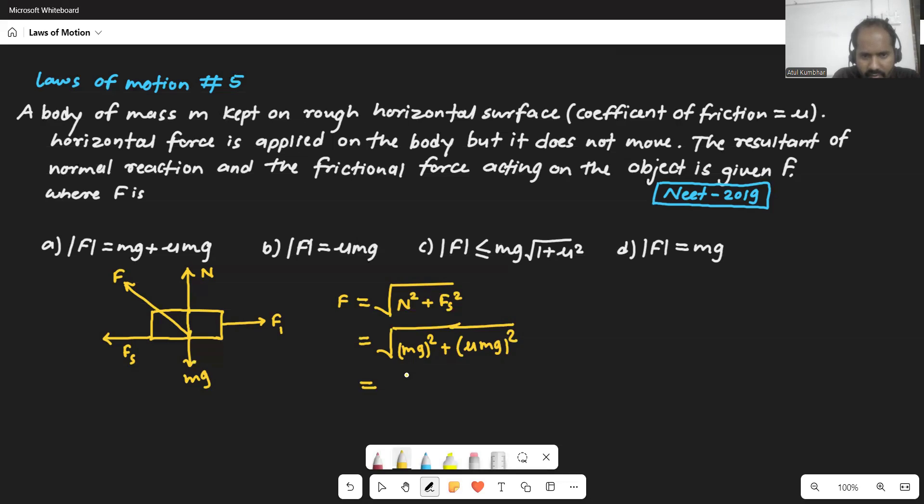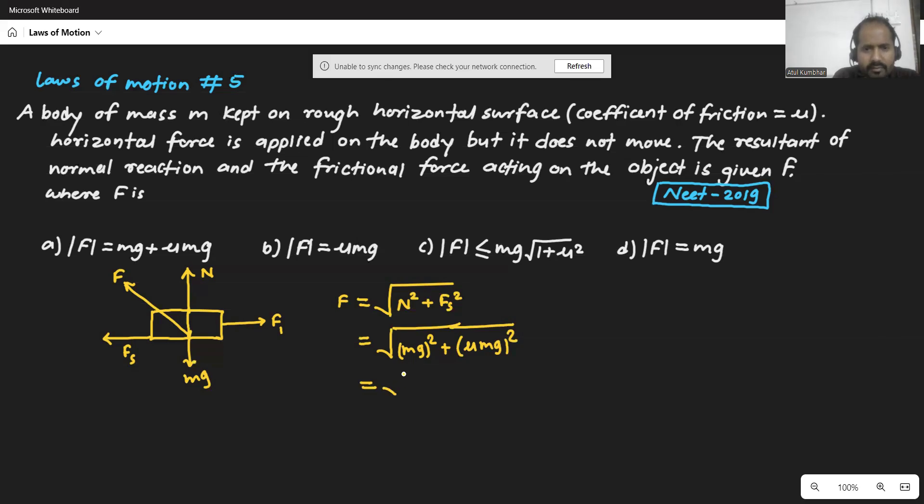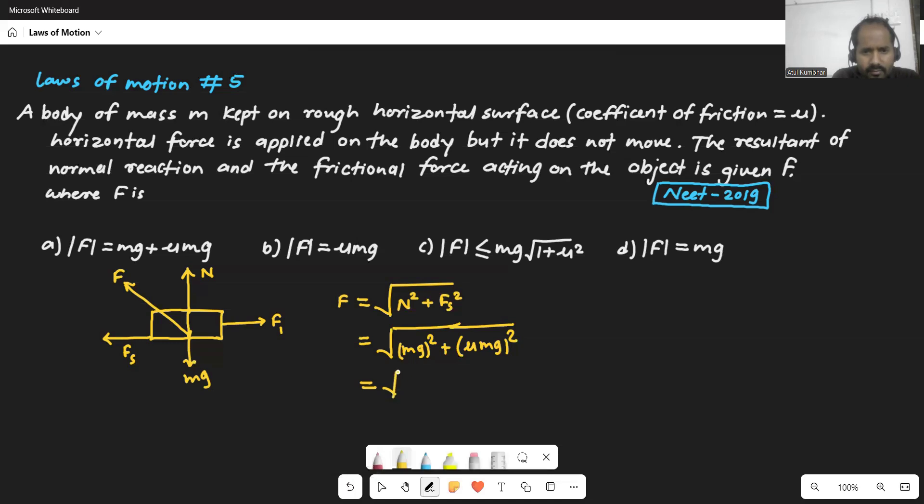So mg squared, mg squared, you can take it common here. What we will get in brackets? So 1 plus mu squared. 1 plus mu squared.